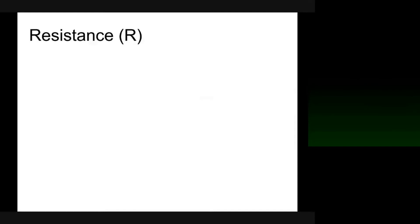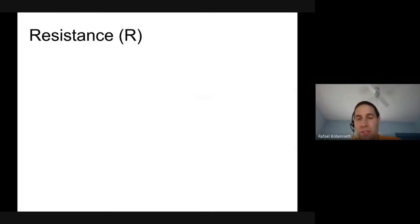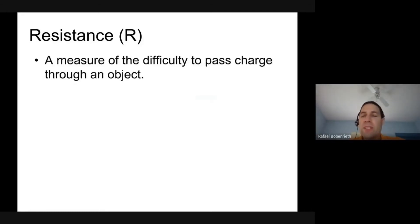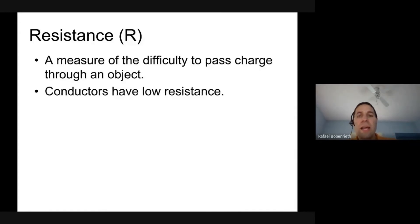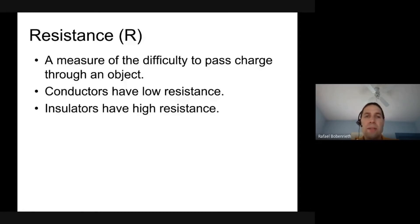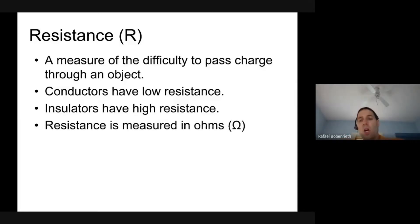Let's talk about three concepts: resistance, current, and electric potential difference. Resistance measures how difficult it is for charge to pass through an object. Conductors like copper, silver, and platinum have low resistance — charge flows easily through them. Insulators like glass and plastic have high resistance — charge does not flow easily. Resistance is measured in ohms, symbolized by the Greek letter omega (Ω).